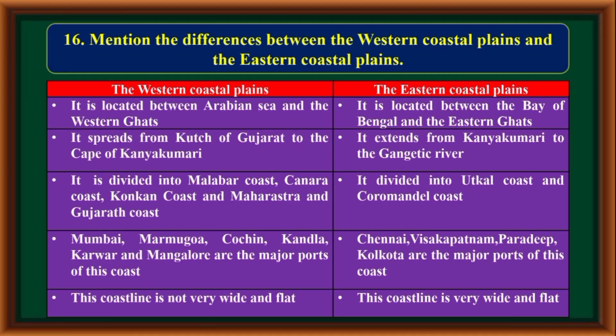Mention the differences between the western coastal plains and the eastern coastal plains. The western coastal plain is located between the Arabian Sea and the Western Ghats. The eastern coastal plain is located between the Bay of Bengal and the Eastern Ghats.